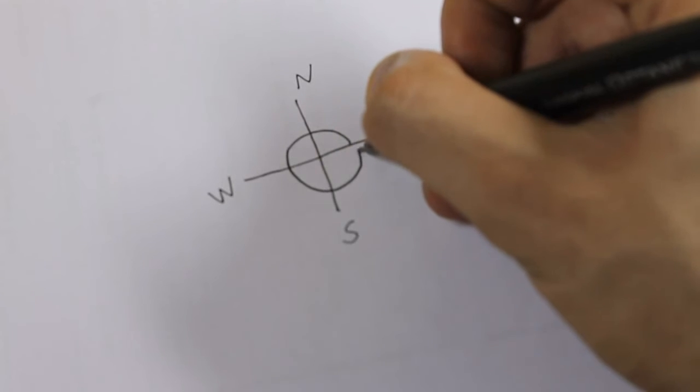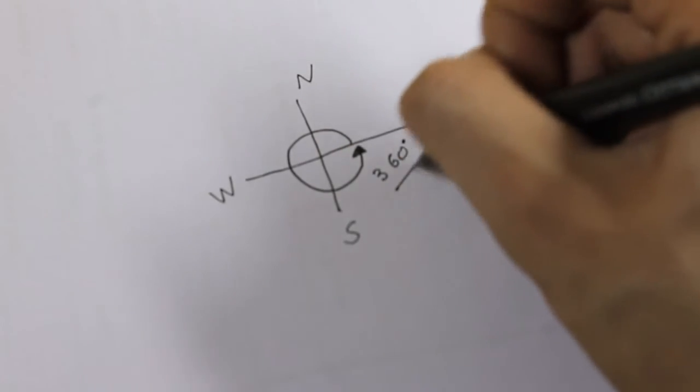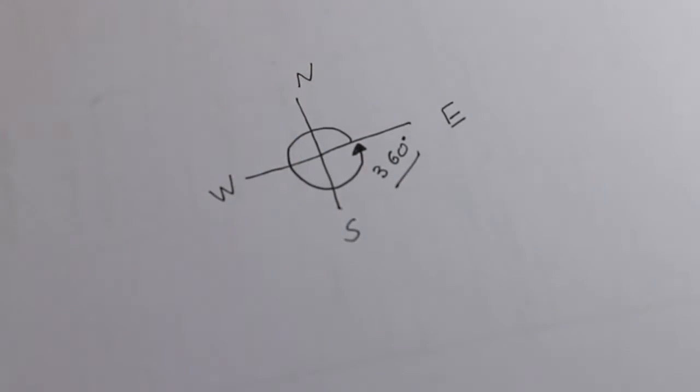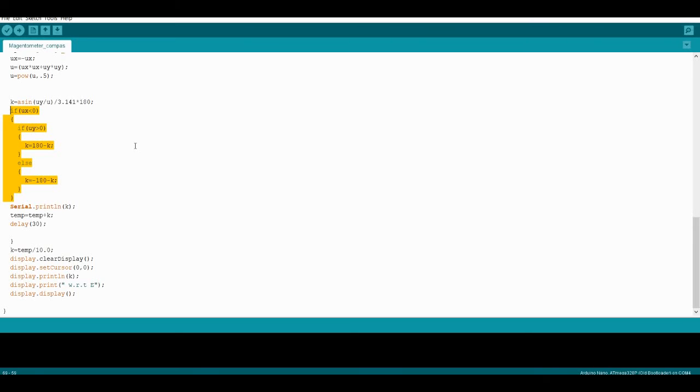But for a compass, we need full 360 degrees. So in order to get a proper way out of your jungle, I added some more lines of the code and finally the instrument started working as I expected it to.